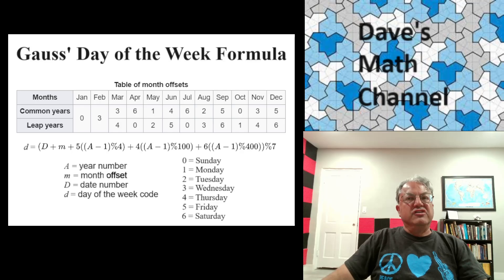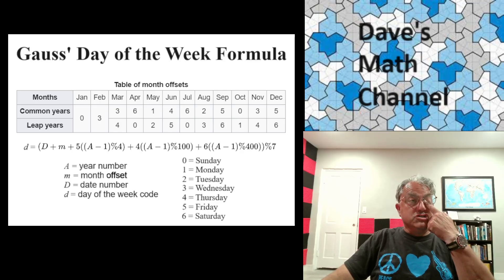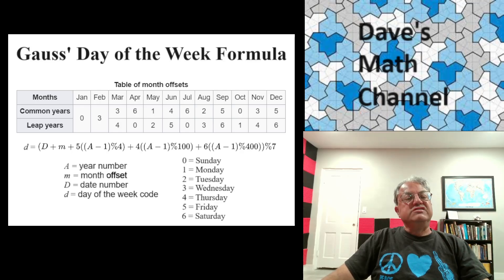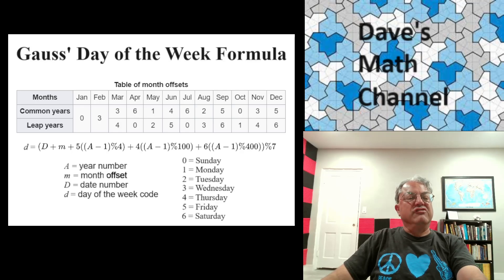So these numbers give the month offsets and you'll notice that for March through December, the offset depends on whether it's a leap year or not. If it's a leap year, you have to use the numbers on the bottom. Otherwise you use the numbers on the top. And so then everything else you just use this formula to calculate what day of the week it is. You could even do this in your head if you memorize this month formula. I've actually been able to calculate days of the week in my head. It's not that easy, but I can do it.